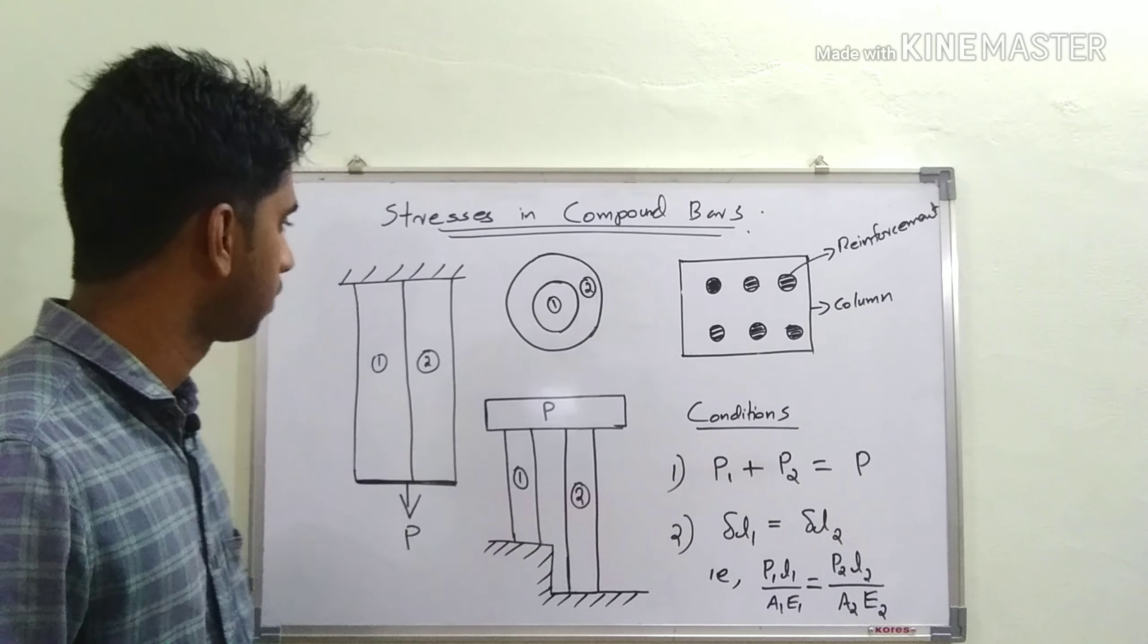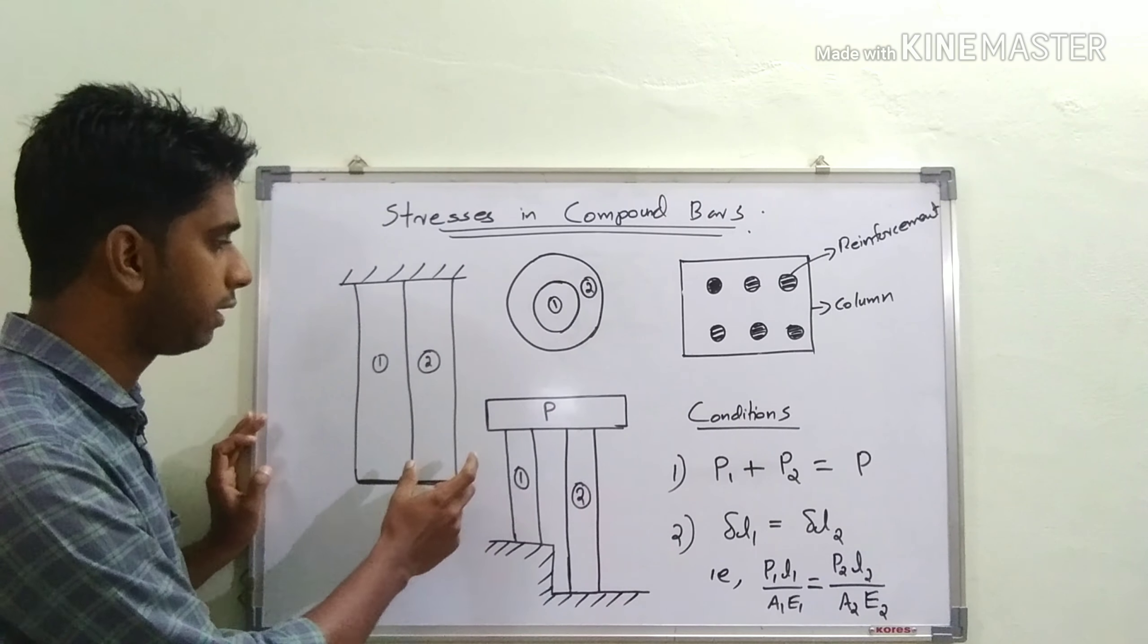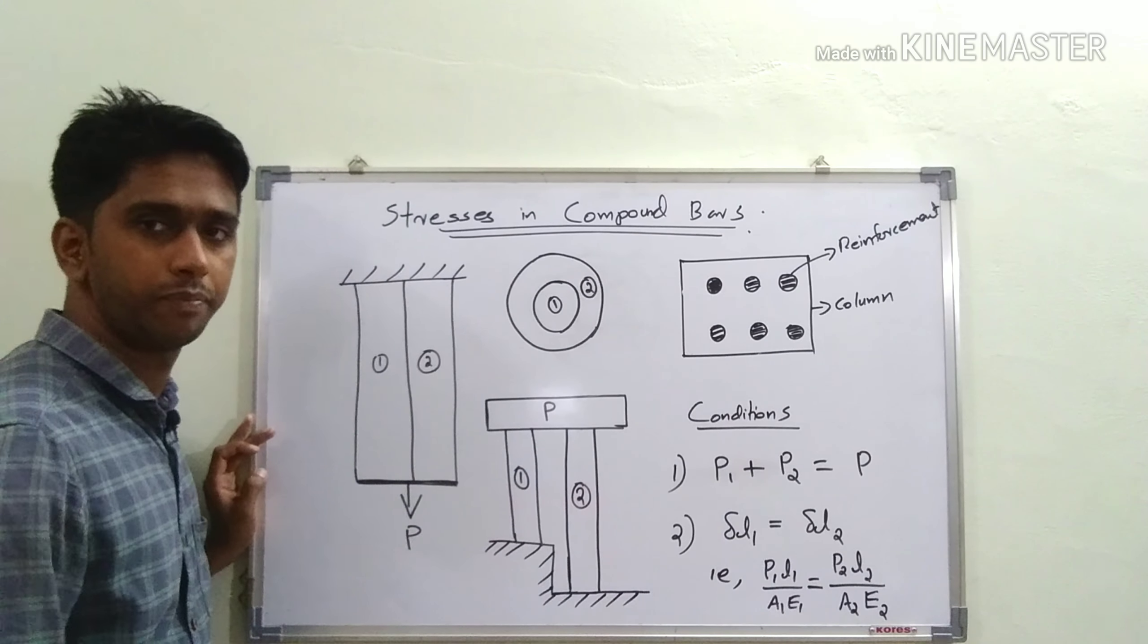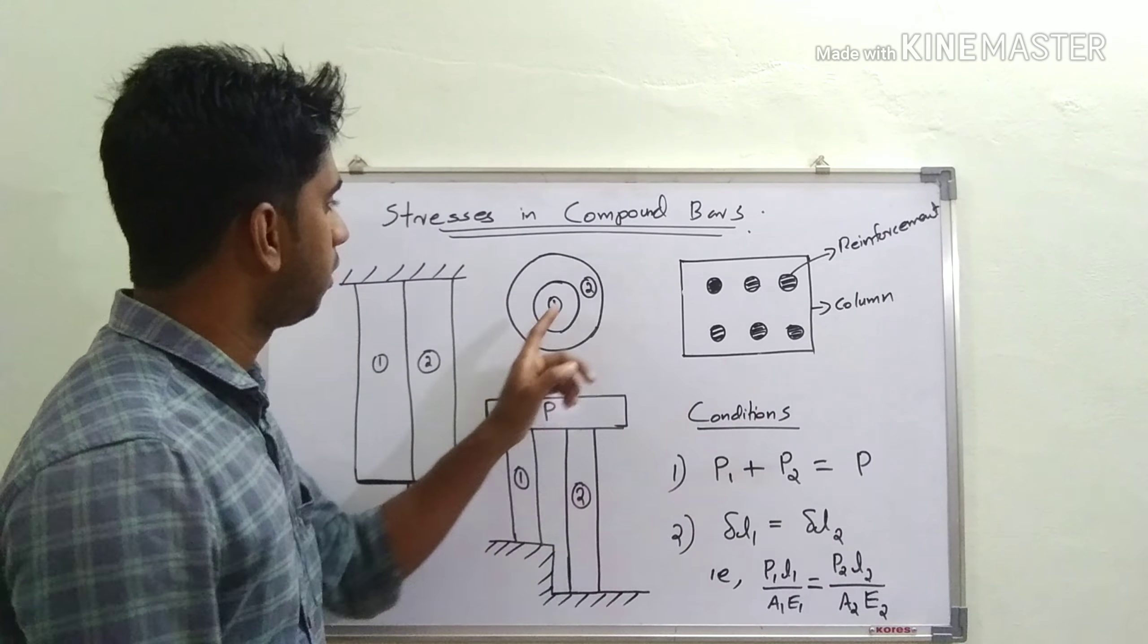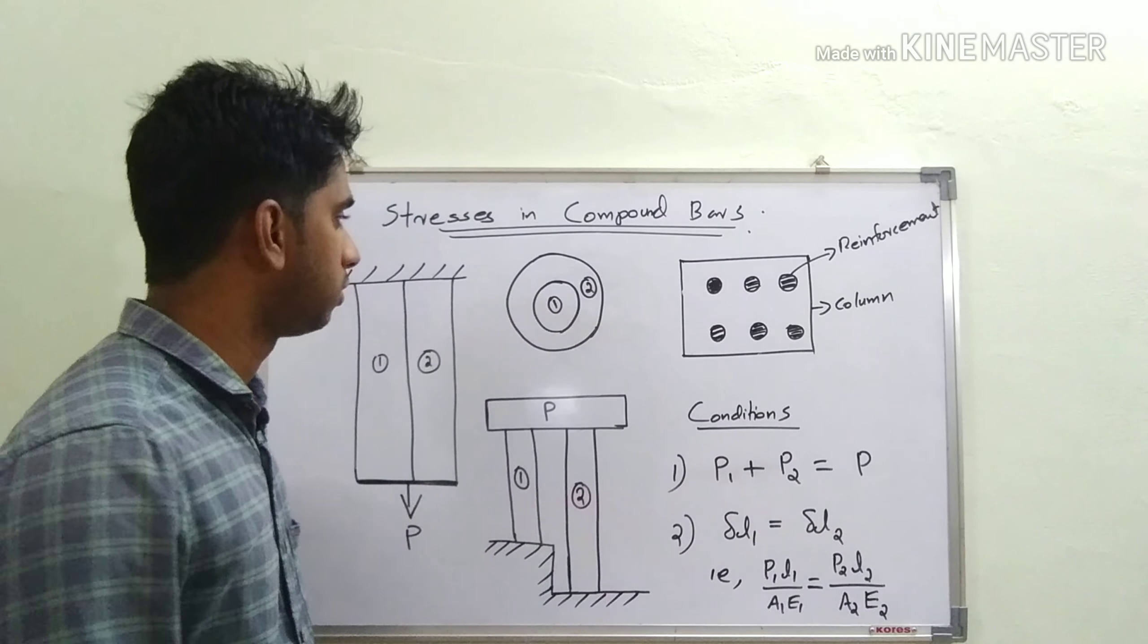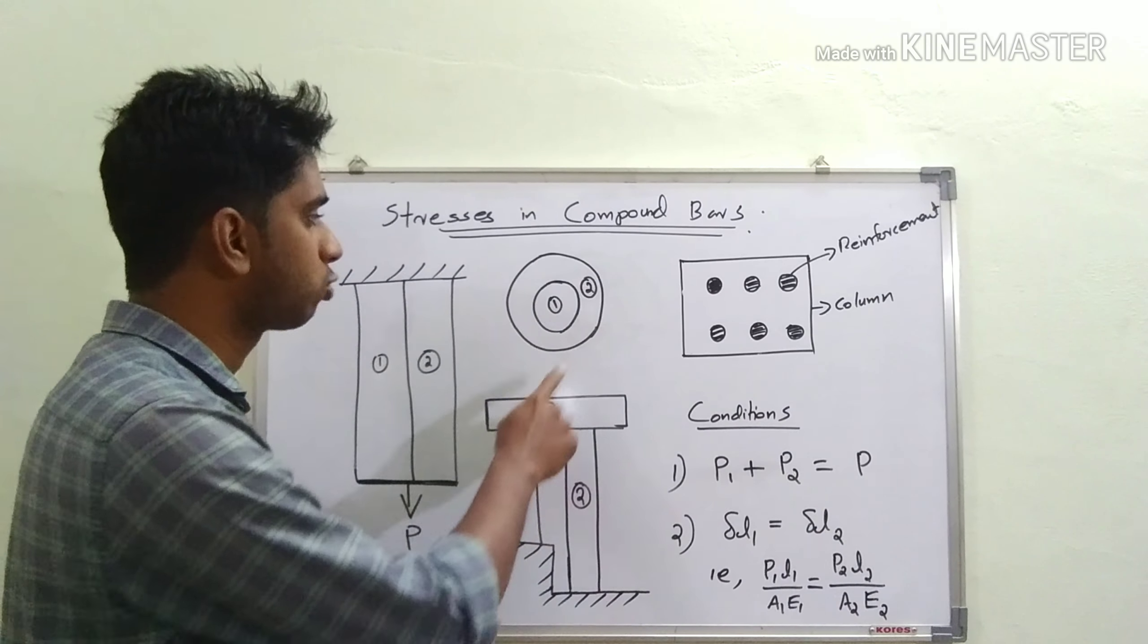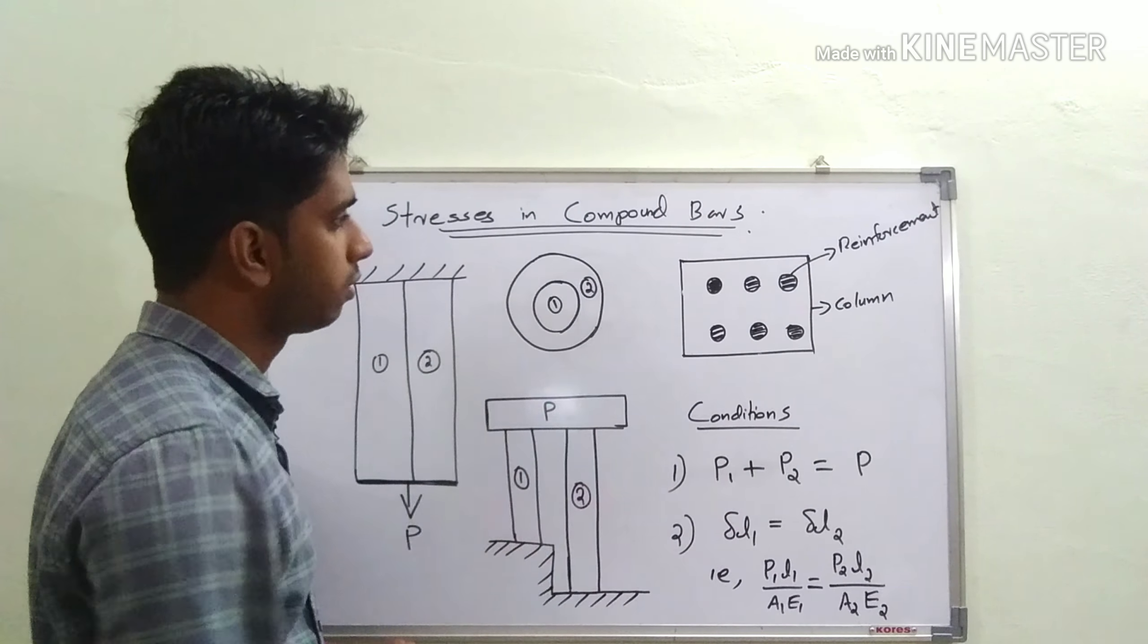Here I have shown four different combinations of composite bars or compound bars. This is a simple composite bar made of two materials with the load P acting at the free end. In the second case, a rod is inserted inside a cylindrical tube; this can also be considered a composite bar.